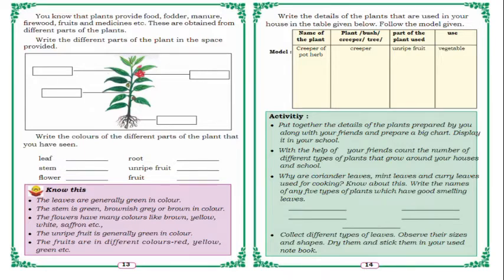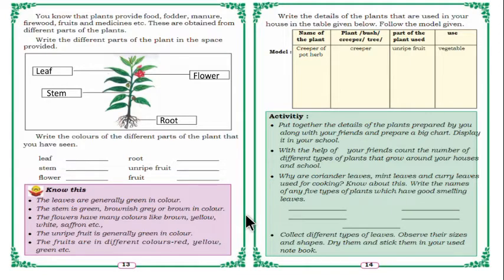Now we are going to write the parts of the plant. Here you can see: leaf, stem, flower and root. Now write the colors of the different parts of the plant. Usually all leaves are green. The stem is also green. Flowers have many different colors. Unripe fruit is green, and ripe fruit is yellow — there are many types, colors and sizes of fruits.